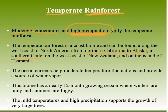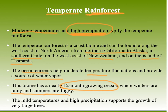Other locations of temperate rainforest include Southern Chile, the west coast of New Zealand, and Tasmania island off Australia. Ocean currents cause fluctuations in temperature and the source of water vapor in these areas. The cool thing about the temperate rainforest is it has a 12-month growing season, lots of plant life, rainy winters, and foggy summers — the north coast of California being a great example.